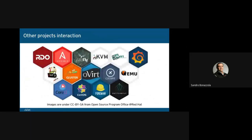As a project, oVirt couldn't exist without many other open source projects. Limiting the view to the most relevant ones, we can mention CentOS, which provides an enterprise-level operating system; GlusterFS, which provides shared reliable storage; QEMU, KVM, and libvirt, providing the infrastructure for running virtual machines, and so on. We'll get to these when we talk about features introduced in our latest release, oVirt 4.4. For those who already saw a similar slide in a previous year's conference, you'll notice a few projects disappeared and a few others appeared.